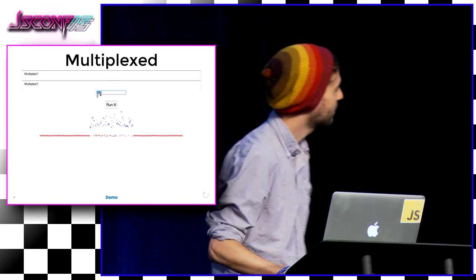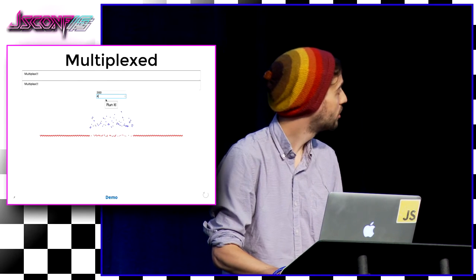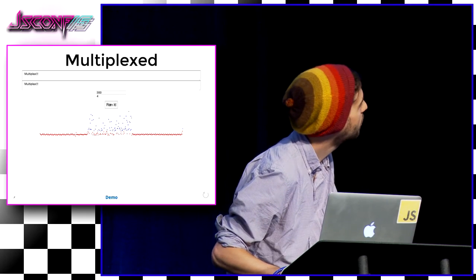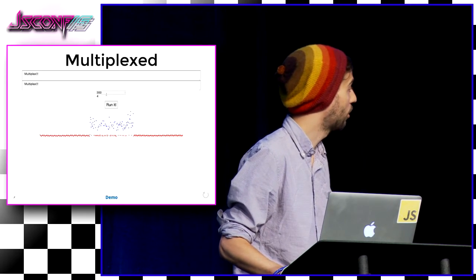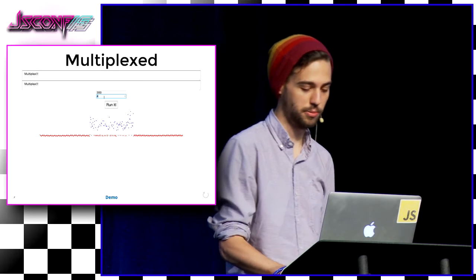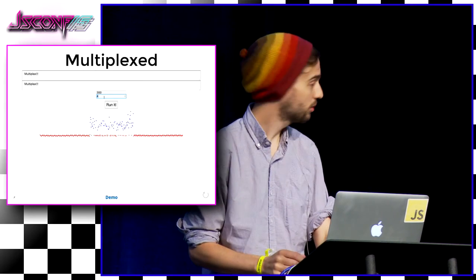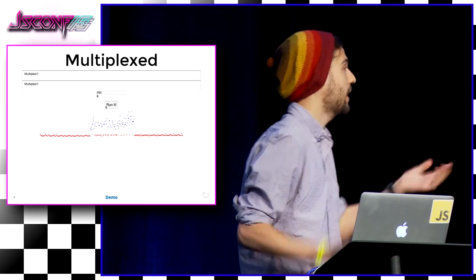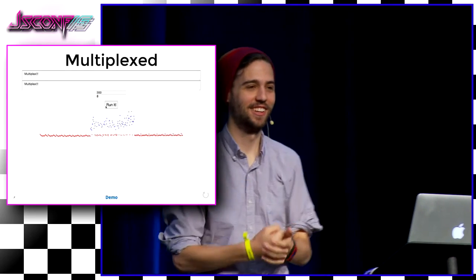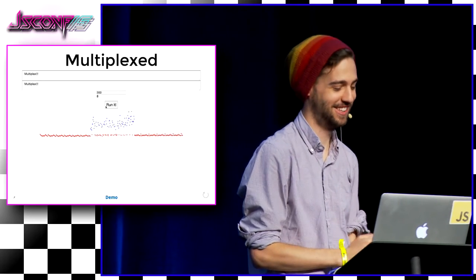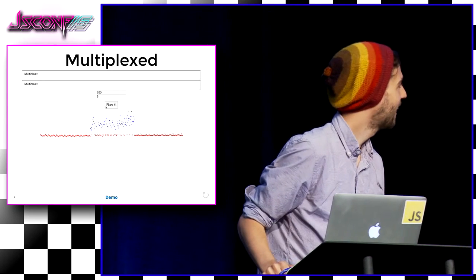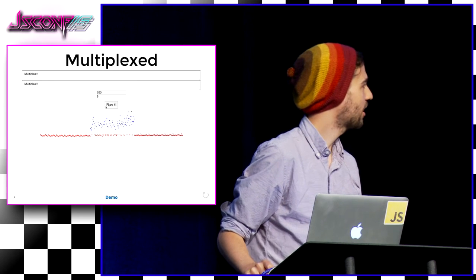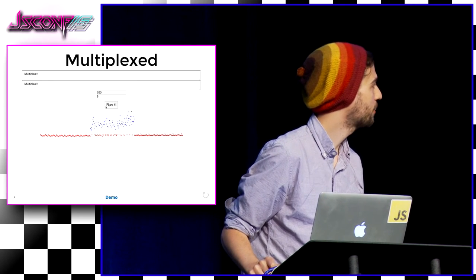Let's be crazy — let's go up to 1200 baud. That's still good. Let's have eight multiplexers. We are cruising — 2400 baud.